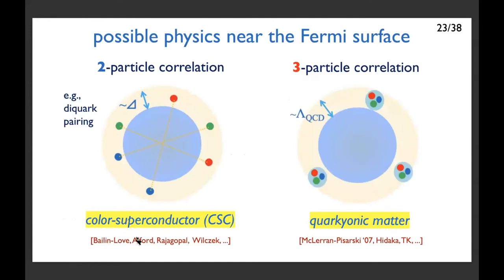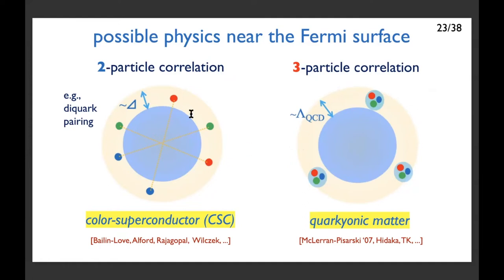There are many physical candidates for such Fermi surface physics. The famous example is the two-particle correlation in the context of diquark pairing, which can lead to the so-called color superconductor, discussed by Berges, Rajagopal, Wilczek, and others. But there are also three-particle correlations, discussed in the context of quark matter by Maclara and Psarovsky. In this picture, there is a quark Fermi sea, and near the Fermi surface there is a stronger baryonic correlation. In either case — attractive correlation near the Fermi surface — we can achieve a stiff quark matter equation of state. This is our main message.